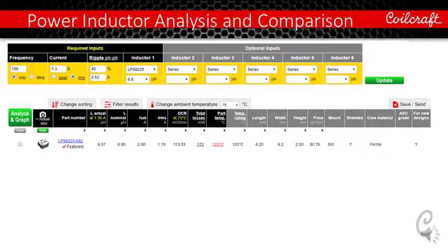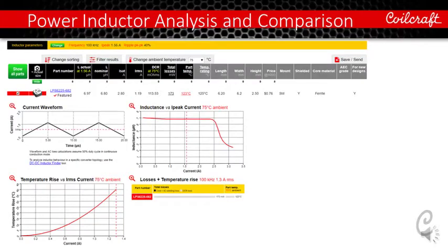One of the key functions of this tool is this Analyze and Graph button. It takes you to the next level of analysis which presents pertinent performance curves and data for the inductor and operating conditions you selected. Again, you can select one or up to six inductors before clicking the Analyze and Graph button.